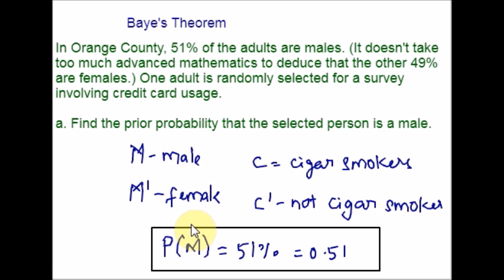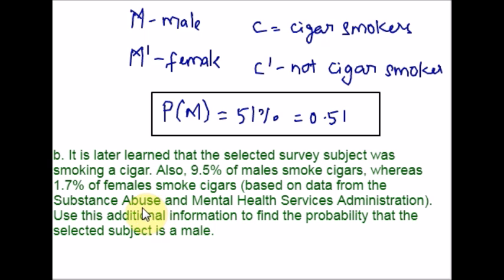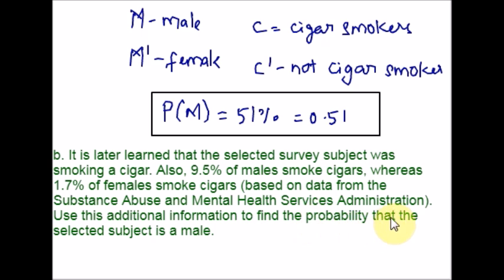Now let us move on to Part B. It is later learned that the selected survey subject was smoking a cigar. Also, 9.5% of males smoke cigars, whereas 1.7% of females smoke cigars. Based on this data, use this additional information to find the probability that the selected subject is a male. The first part was prior probability, and this is the posterior probability after receiving additional information.